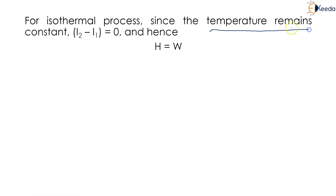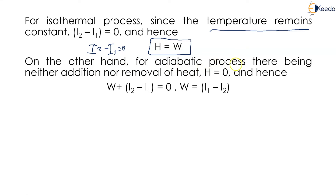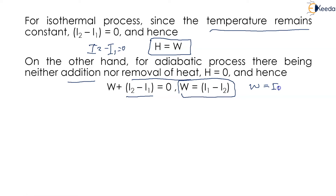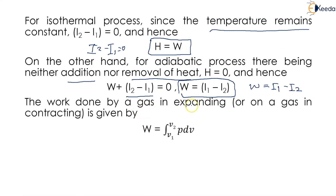For the isothermal process, the temperature remains constant, so (i₂ − i₁) = 0 and hence H = W. On the other hand, for the adiabatic process, there is neither addition nor removal of heat, so H = 0, and hence W + (i₂ − i₁) = 0, which gives W = i₁ − i₂. The work done by a gas in expanding or on a gas in contracting is given by W = ∫P dV from V₁ to V₂, which is Equation 4.